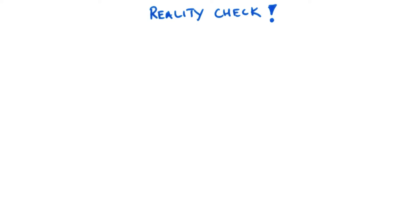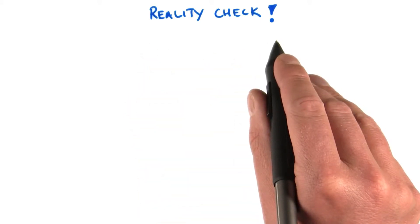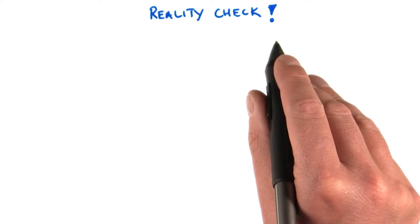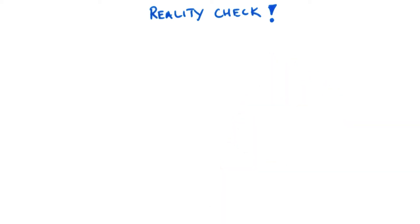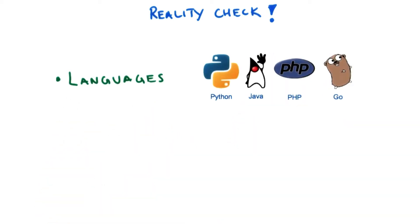Okay, so by now you've heard a lot of positive things about App Engine and how it can help you build scalable applications. But let's do a reality check here. Surely, there must also be trade-offs involved when using App Engine. Let's start off with programming languages. Since App Engine provides services to control the execution environment, it also has a set of programming languages it supports.